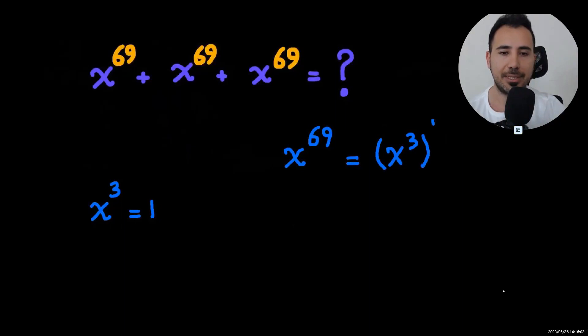Or we could write it this way: it's the same as x cubed to the power of 23. X cubed is one, so x to the power of 69 equals one.